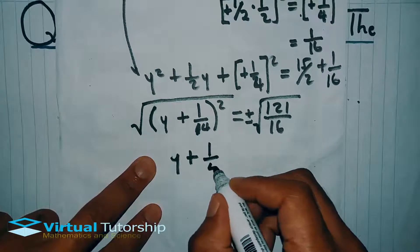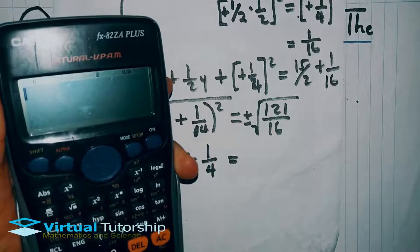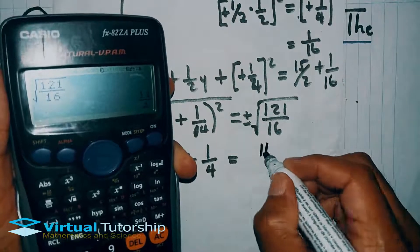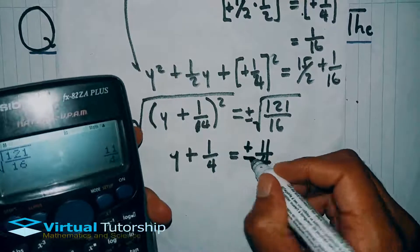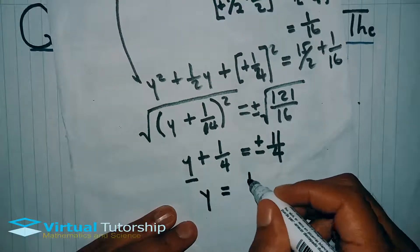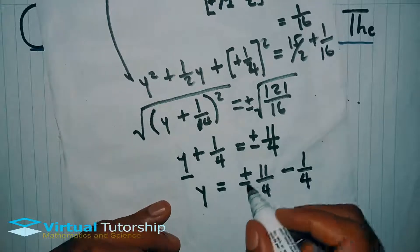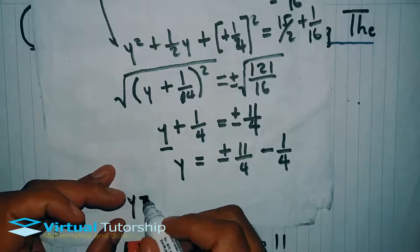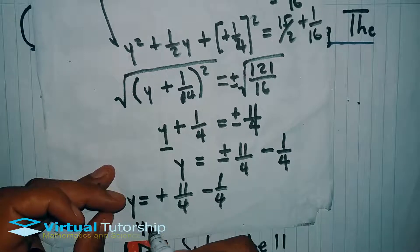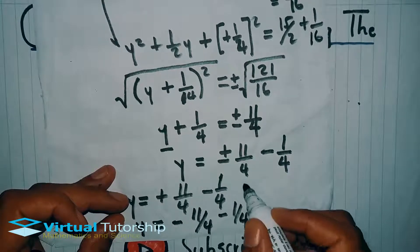We square root both sides. On the left, the squared cancels, giving y plus 1 over 4. On the right, plus or minus the square root of 121 over 16, which is 11 over 4. So y plus 1 over 4 equals plus or minus 11 over 4. Moving 1 over 4 to the right, y equals plus or minus 11 over 4 minus 1 over 4. Because of the plus-minus, we have two solutions: y equals positive 11 over 4 minus 1 over 4, and y equals negative 11 over 4 minus 1 over 4.